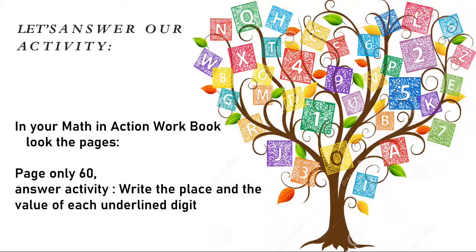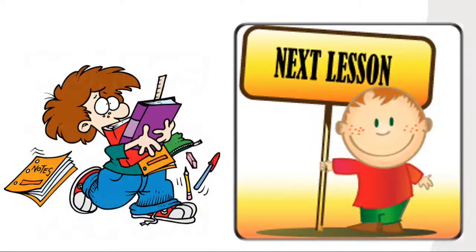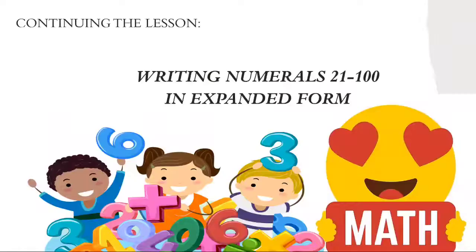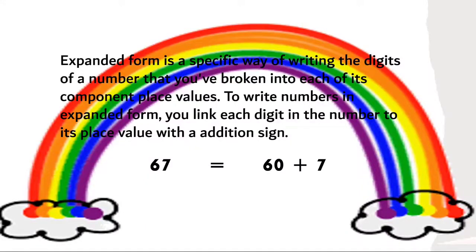Let's go. This is a continuation of the first topic we learned earlier. Our next lesson is related to place value: writing numerals 21 to 100 in expanded form. Expanded form is a specific way of writing the digits of a number broken into each of its place value components. For example, 67 is equal to 60 plus 7 — that is, 6 tens plus 7 ones equals 67.